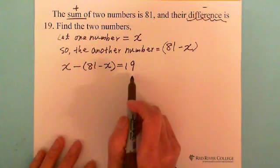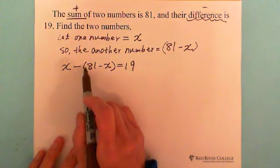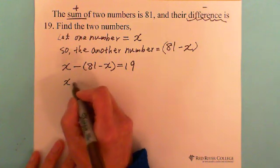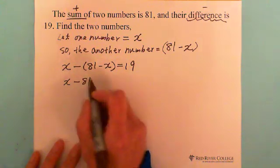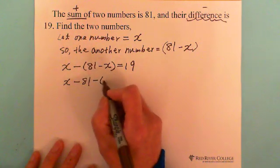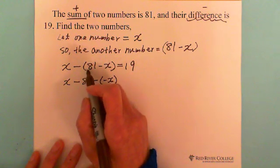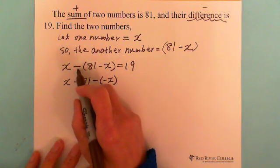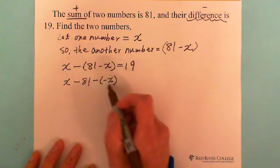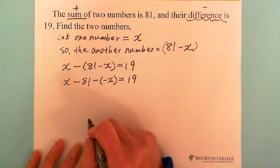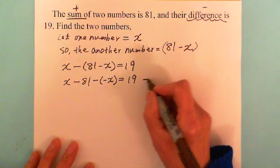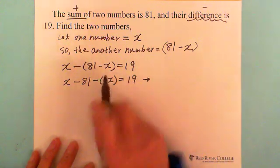Then we can solve it. So x minus (81 minus x): when you break down the bracket, there is a negative sign in front, so you need to be careful. It becomes x minus 81, and then subtracting negative x becomes plus x. So we get x plus x, which is 2x, minus 81.